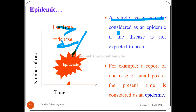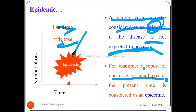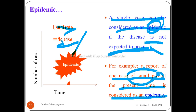A single case can be considered as an epidemic if the disease is not expected to occur. For example, a report of one case of smallpox at the present time would be considered an epidemic, because smallpox is expected to be zero — it is not expected to occur at all.